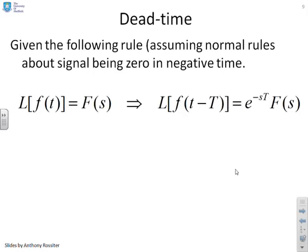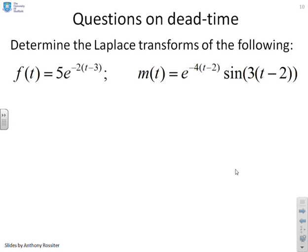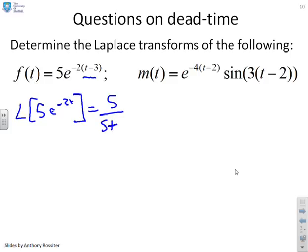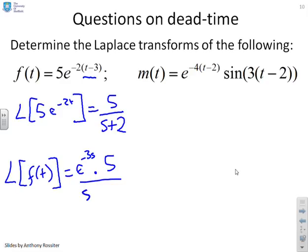Now, dead time — another special case of Laplace. The rule is: if the Laplace transform of f(t) is F(s), and that signal is delayed by T seconds, then the corresponding Laplace transform is e^{−sT}·F(s). It assumes the signal is zero for negative time. For example, f(t) = 5e^{−2(t−3)} has the Laplace of 5e^{−2t} equal to 5/(s + 2), so the Laplace of f(t) — delayed by three seconds — is simply e^{−3s} · 5/(s + 2).